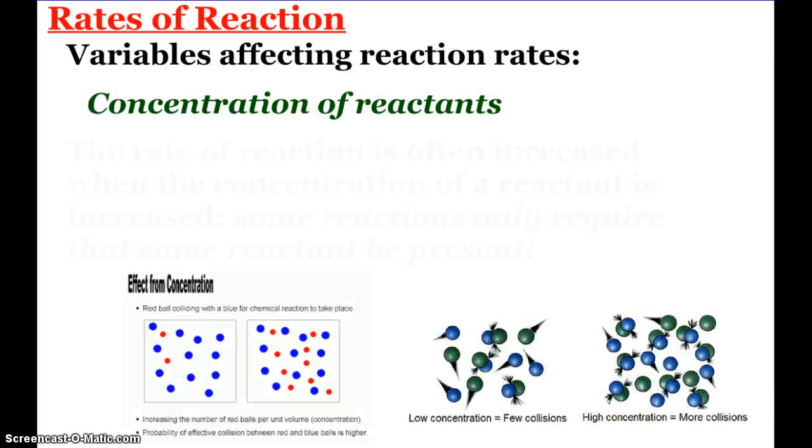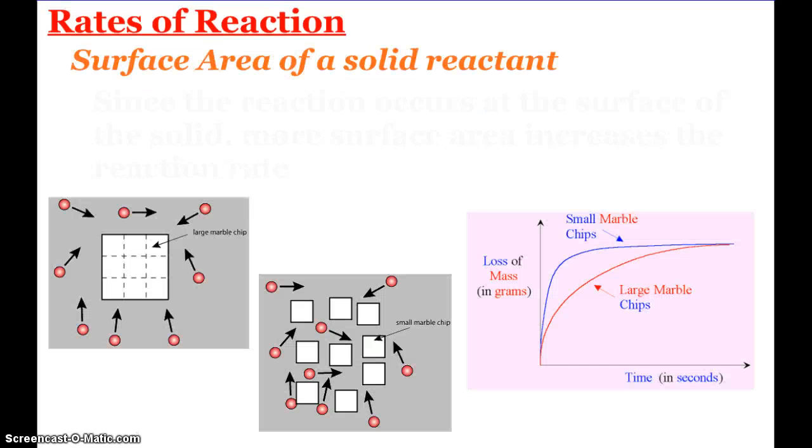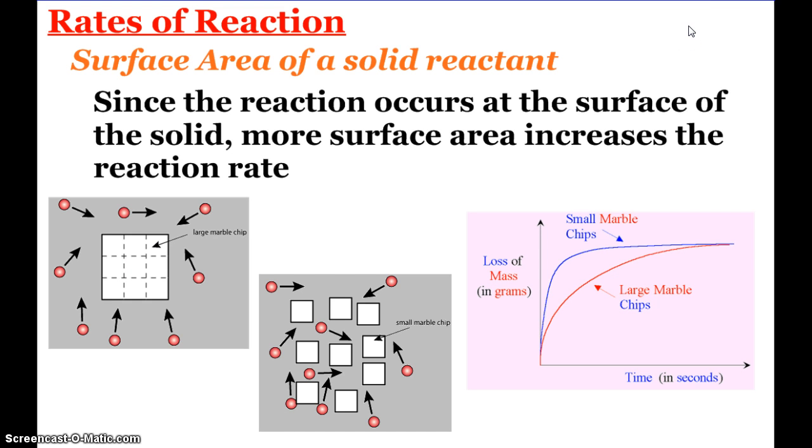Our next variable is the surface area of a solid reactant. If we have a solid reactant, typically reacting in a liquid or a gas, the reaction is occurring at the surface of the solid. So the more surface area there is, the faster the reaction is going to proceed. Here's some diagrams for you. If we have a large chip of marble reacting with acid, those little red circles are representing that. The rate will be faster if we bust that marble chip up.